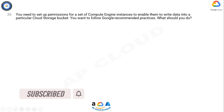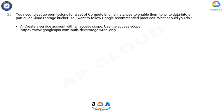Question: You need to set up permissions for a set of Compute Engine instances to enable them to write data into a particular Cloud Storage bucket. You want to follow Google recommended practices. What should you do? Option A: Create a service account with an access scope; use the access scope https://www.googleapis.com/auth/devstorage.write_only.